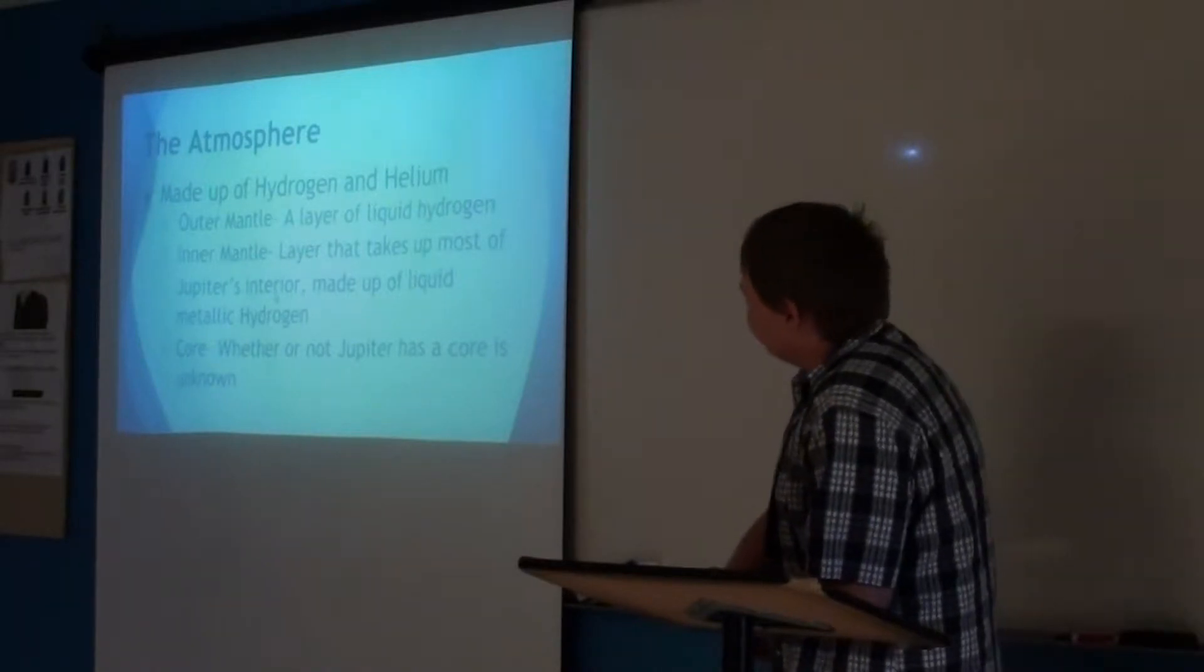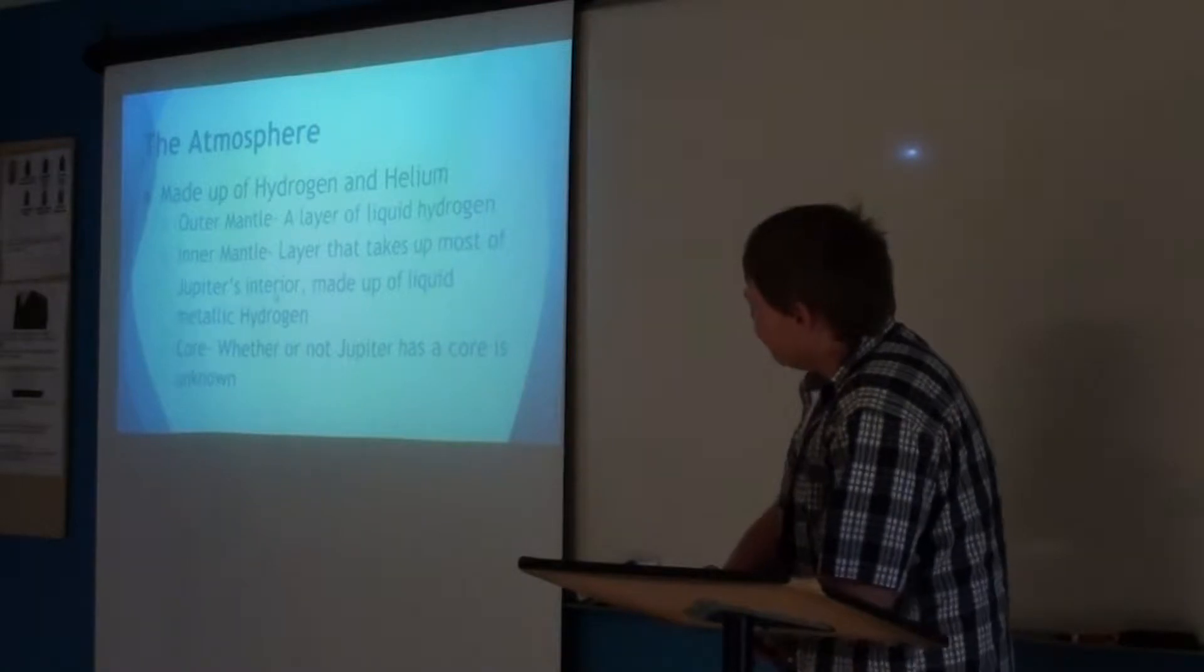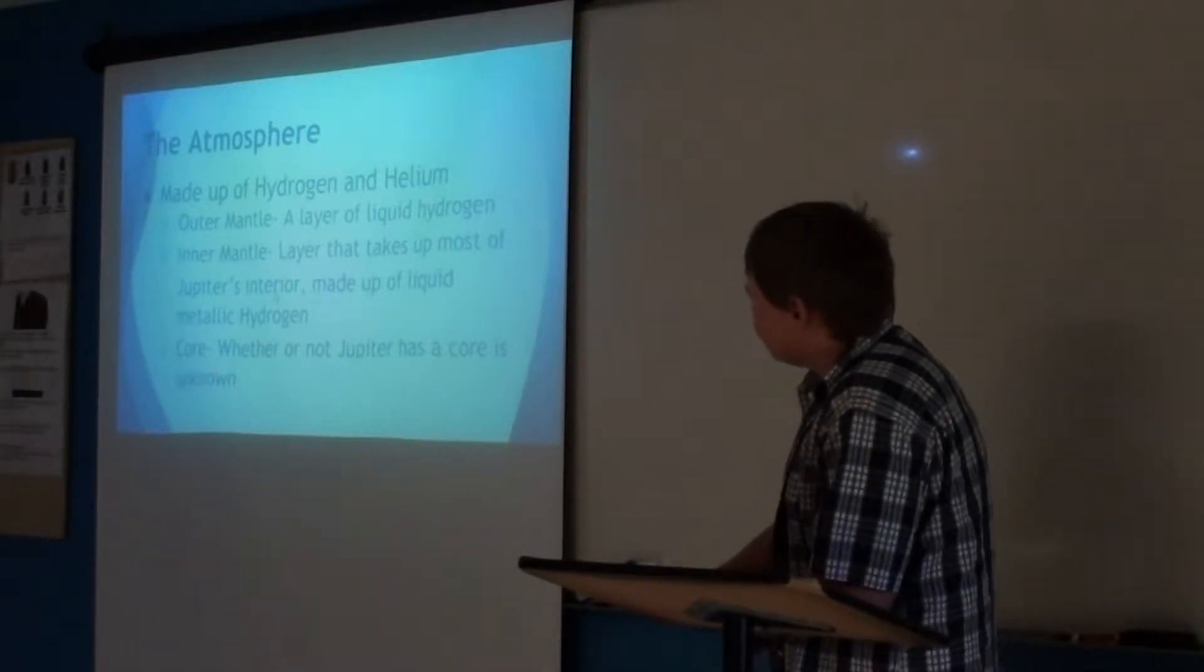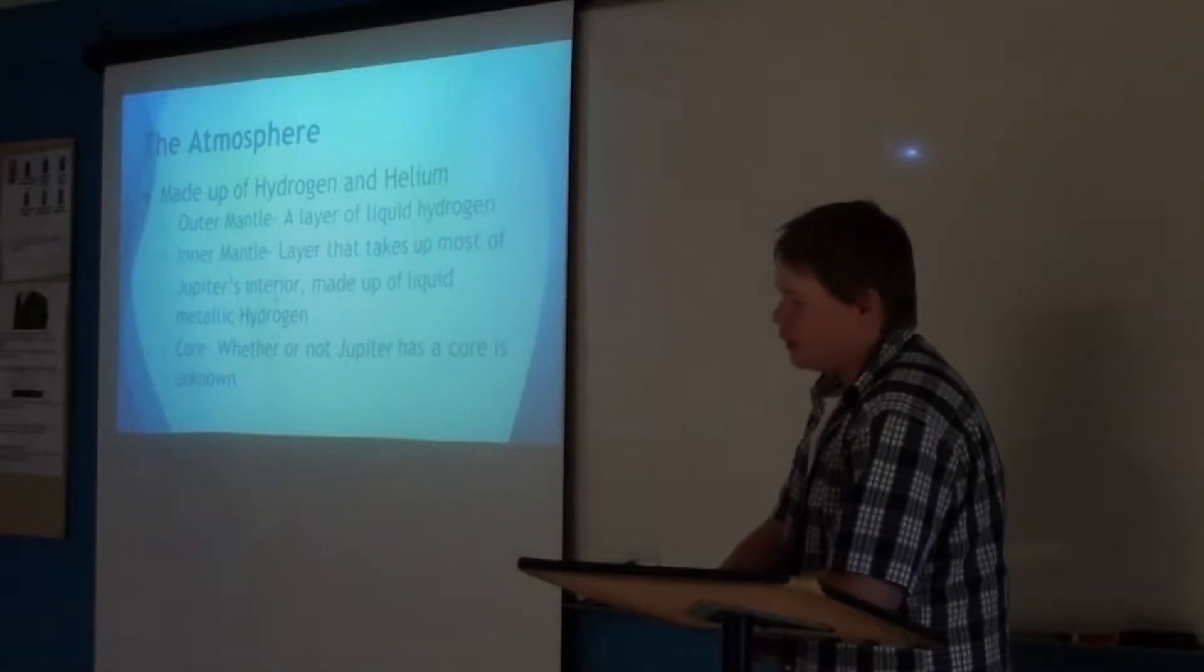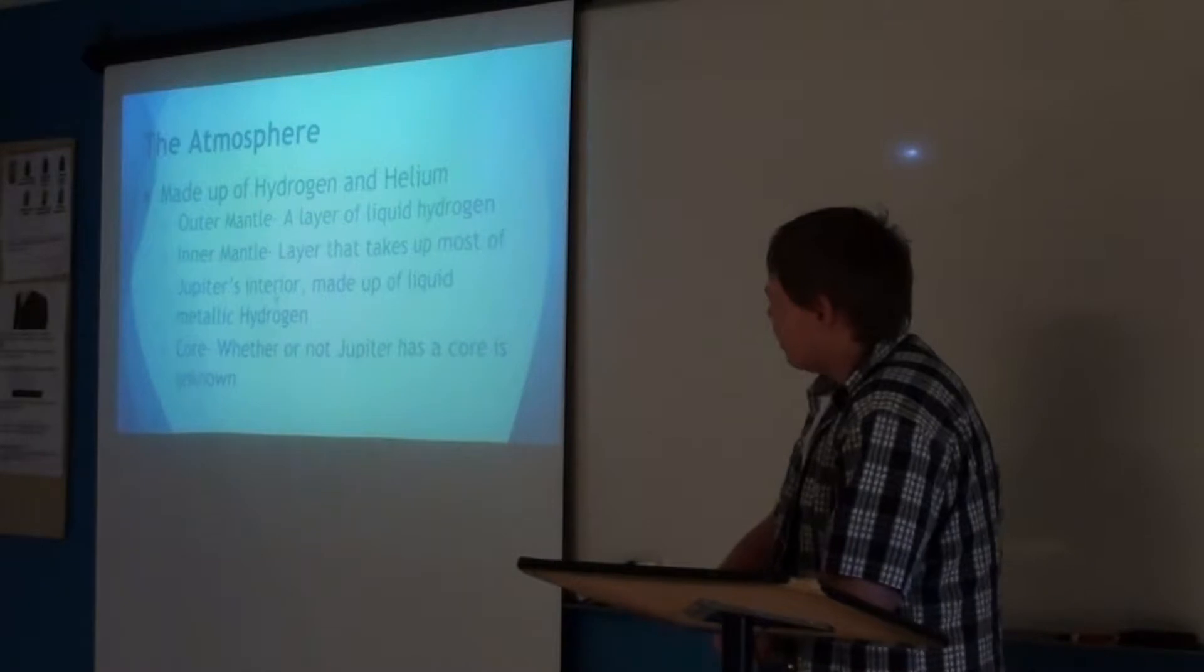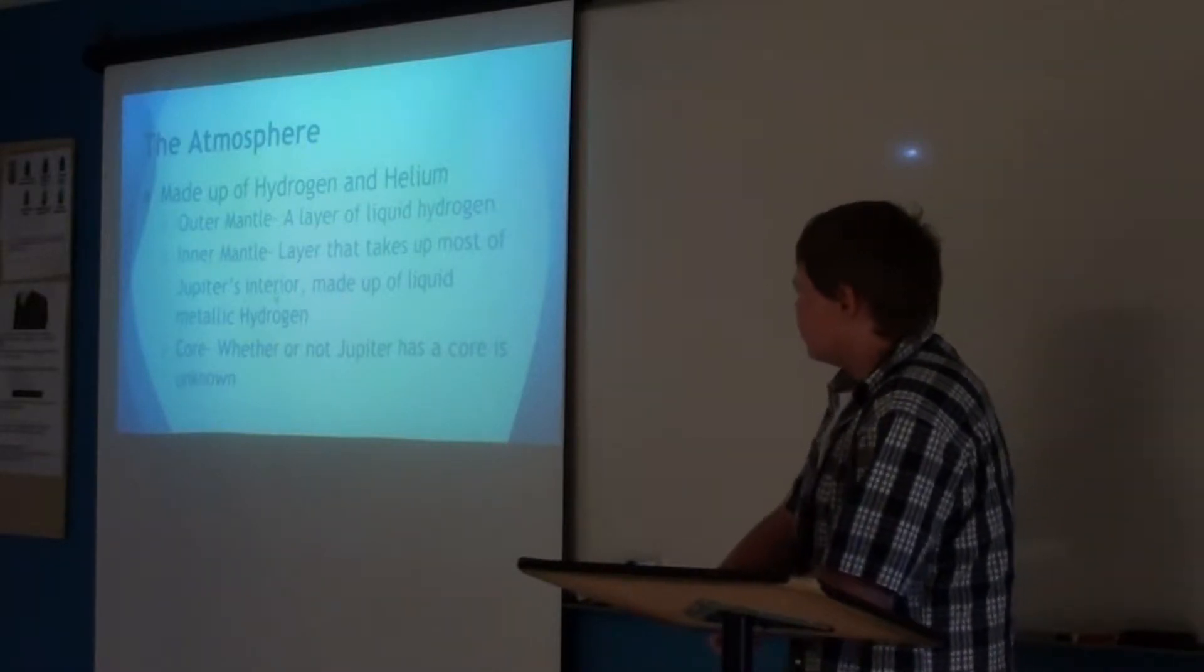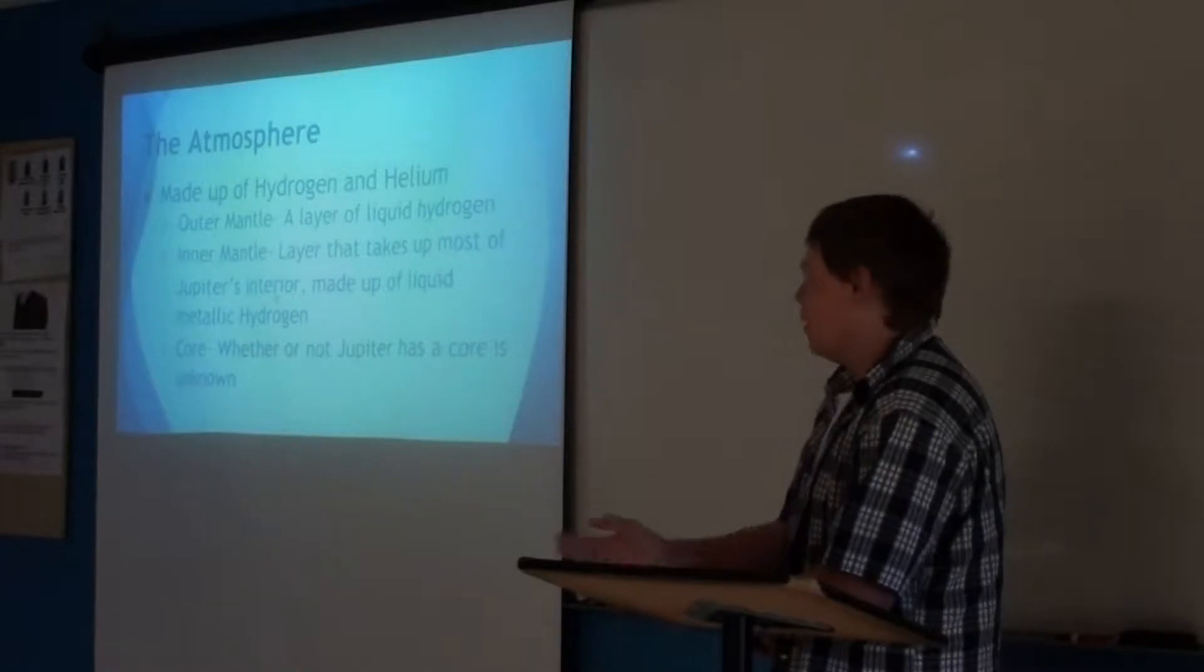The atmosphere is made of hydrogen and helium. The outer mantle is a layer of liquid hydrogen, and the inner mantle, a layer that takes up most of Jupiter's interior, is made up of liquid and metallic hydrogen. And the core: whether or not Jupiter has a core is unknown because it could be a gas or it could be solid.